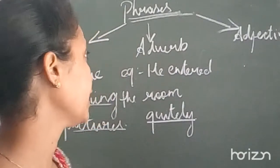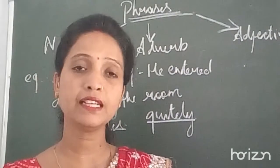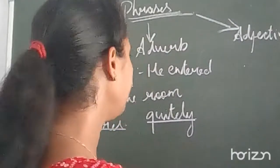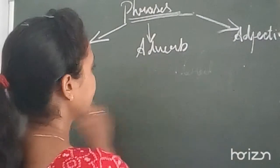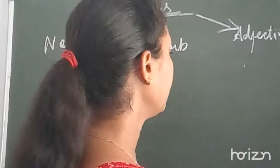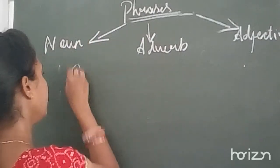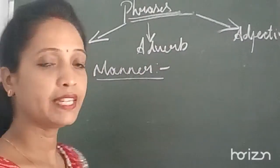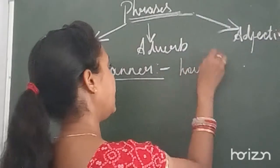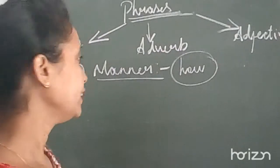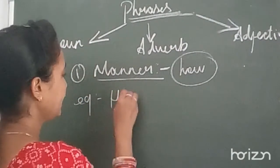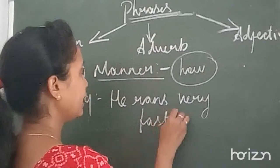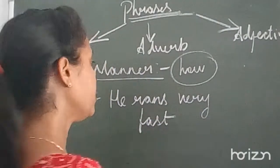This is your adverb — adverb of manner. There are types: adverb of manner, adverb of place, adverb of time. Adverb of manner tells you how the action took place in the sentence. For example: he runs very fast — 'very fast' is the adverb of manner telling you how he runs.